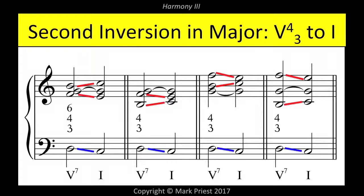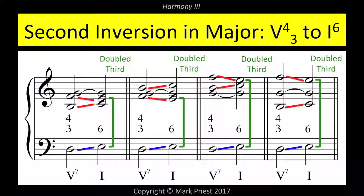With the fifth in the bass, there are two possible chords of resolution: I or I6. In the first instance, resolving to the root position I presents nothing unusual, whether close or open voicing. As for the second instance, resolving to the I6, the third of the first inversion tonic chord is naturally doubled.